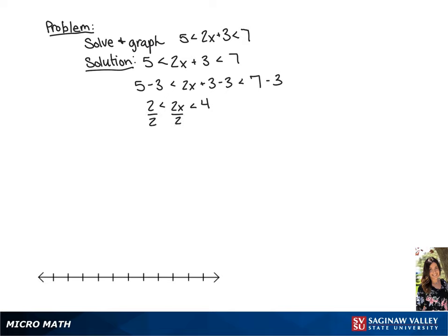Now we're going to divide all sides of this inequality by 2, giving us 1 is less than x, and x is less than 2. So x is going to fall somewhere between 1 and 2.